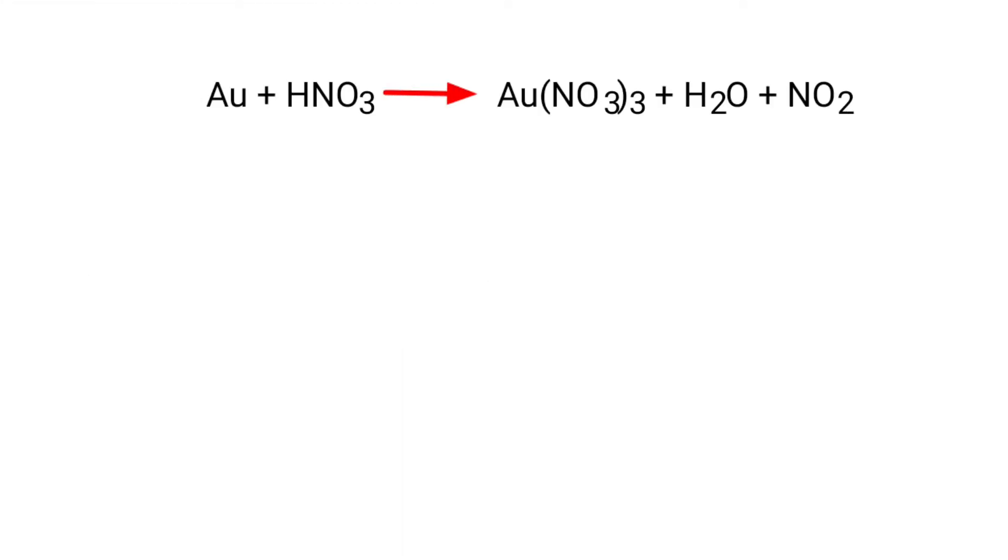First thing we do is give each compound a letter coefficient. aAu plus bHNO₃ gives us cAu(NO₃)₃ plus dH₂O plus eNO₂.